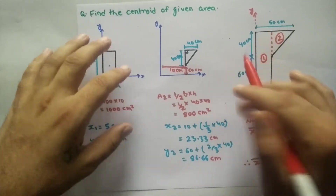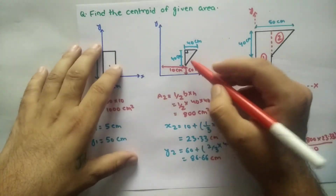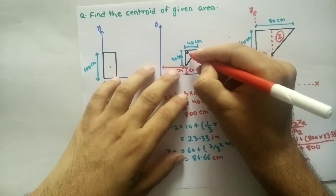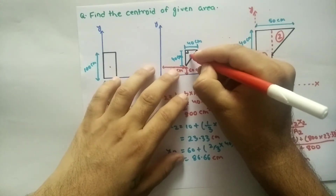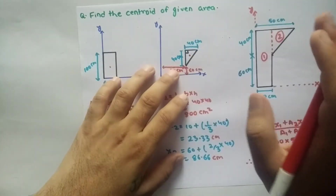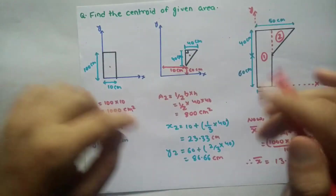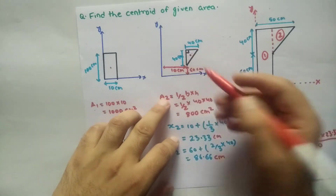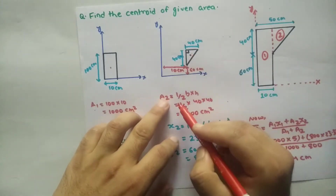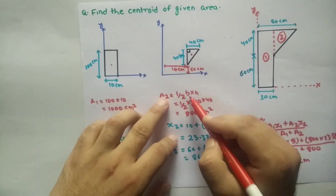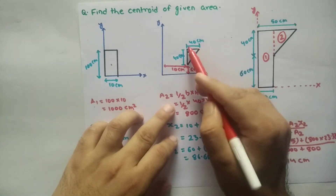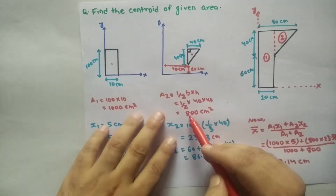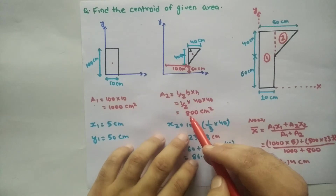This triangle — we have to find its centroid. The first thing is the area of the triangle: area = half × base × height = half × 40 × 40 = 800 cm². Now for the second part, we need x2 — the x-bar centroid distance for the triangle.